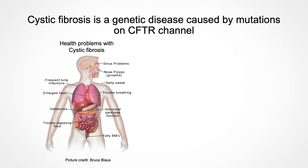CFTR encodes for a protein whose mutations directly lead to a disease called cystic fibrosis. Cystic fibrosis is a really devastating disease which affects 1 out of 2,500 people in co-patient populations. It is also a systematic disease that affects many organs with epithelial surfaces such as lungs, heart, and intestines. The most severe symptoms are centered around the respiratory system.